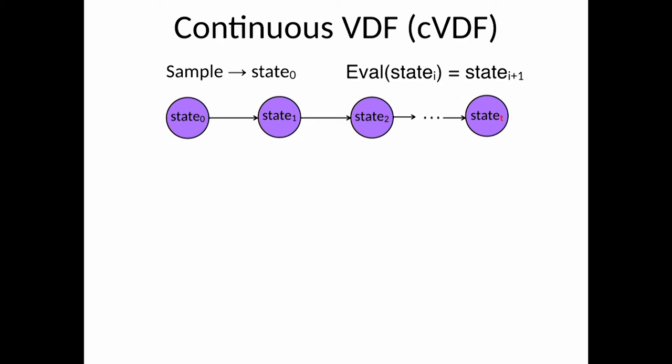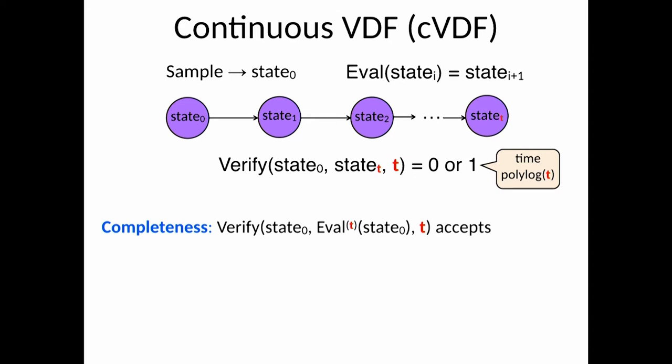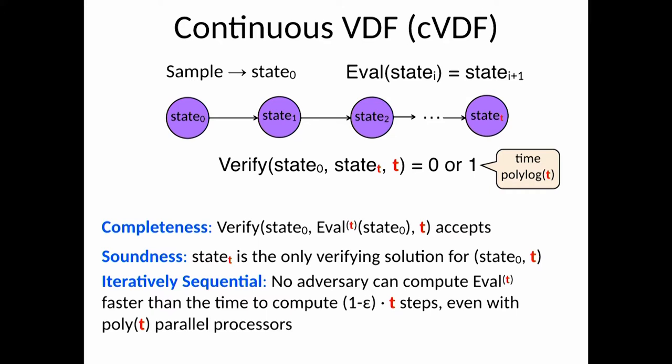Everybody can verify each step along the way, namely for any t, you can verify that the tth state is the right state, and the verification is super fast. You don't need to do t steps of computation. Completeness says that you can verify every intermediate state, soundness says that there's only one unique tth state that verifies, and sequentiality means that if you want to compute the tth state, you need to do t steps of computation.